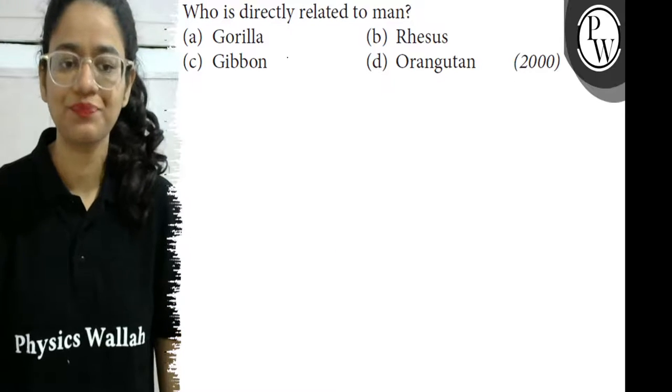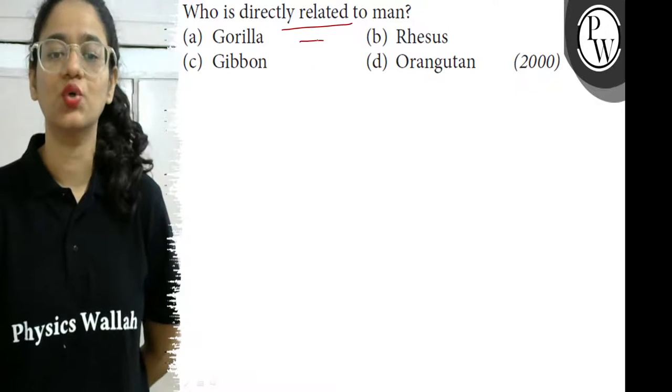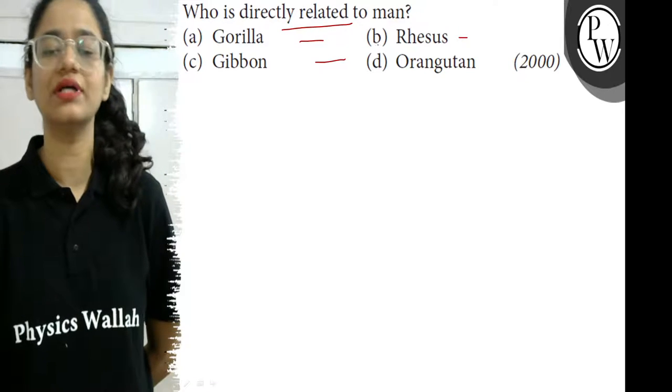Hello dear students, let's see the question: Who is directly related to man? The options are gorilla, rhesus, gibbon, or orangutan.